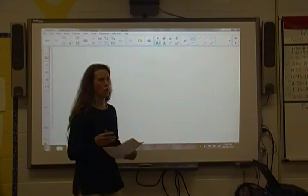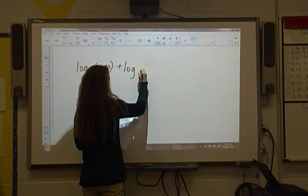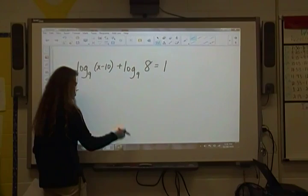So if we look at this first one here, we've got log base 9 of x minus 10 plus log base 9 of 8 is equal to 1. So in order to switch forms, we need to have one log. We can't switch forms when there's two, so we're going to just condense these. Now addition, if you remember, means that we're going to multiply.